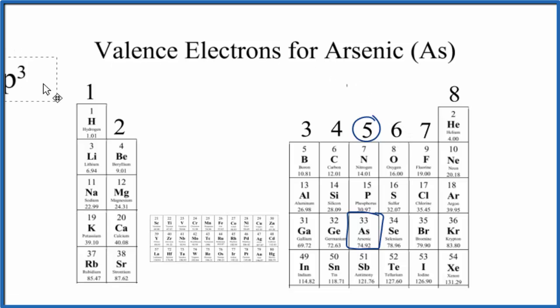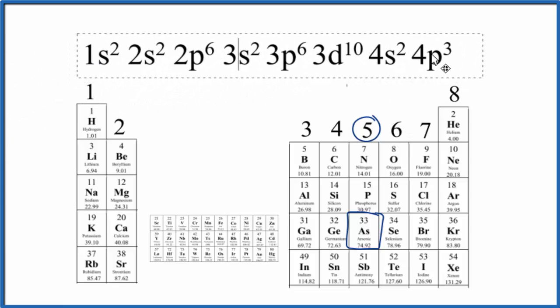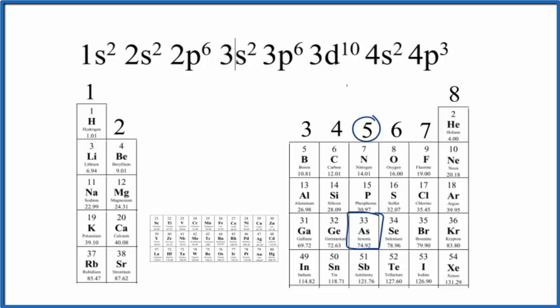We could also look at the electron configuration for arsenic. If we do that, we're looking at the highest energy level, that's the fourth energy level. So we have two plus three, that gives us five valence electrons for arsenic based on its electron configuration.